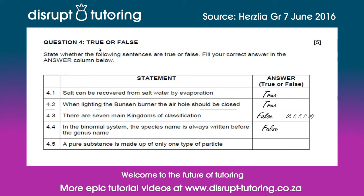Finally, 4.5: a pure substance is made up of only one type of particle. This is true, and that is how it would be called a pure substance — because there's nothing else in it. So that's that for Question 4 in this exam paper.